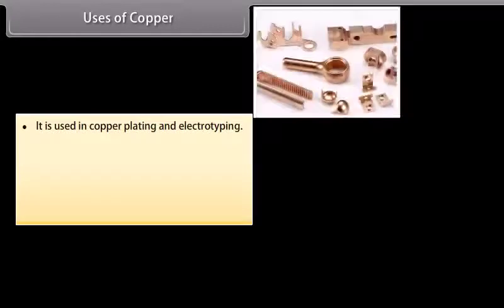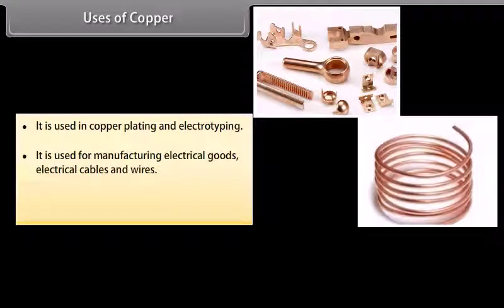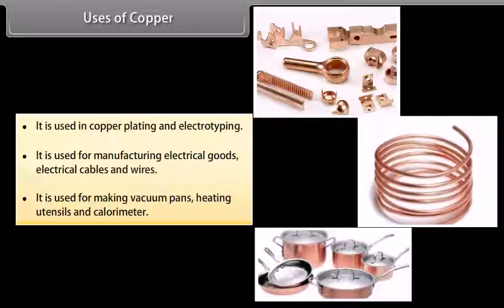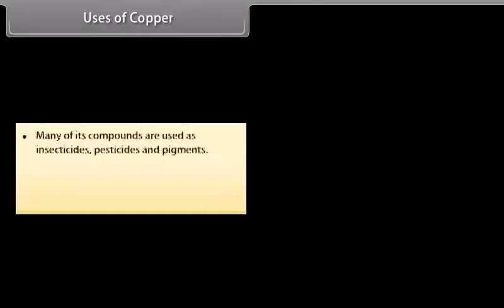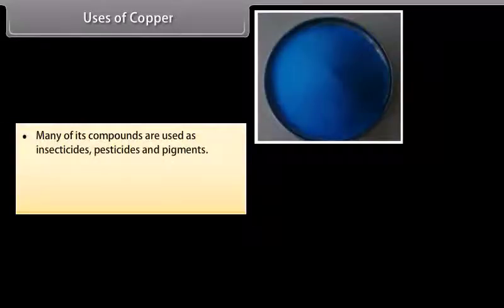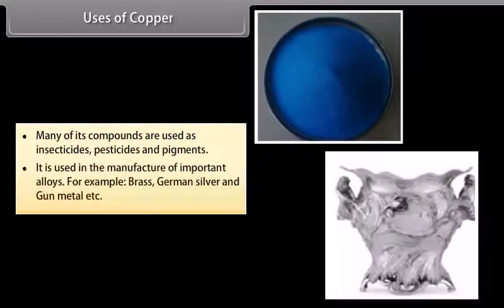Uses of copper. It is used in copper plating and electrotyping. It is used for manufacturing electrical goods, electrical cables and wires. It is used for making vacuum pans, heating utensils and calorimeter. Many of its compounds are used as insecticides, pesticides and pigments. It is used in the manufacture of important alloys. For example, brass, german silver and gunmetal etc.